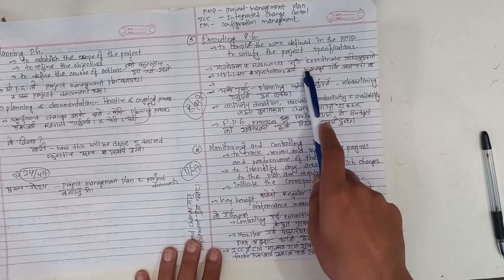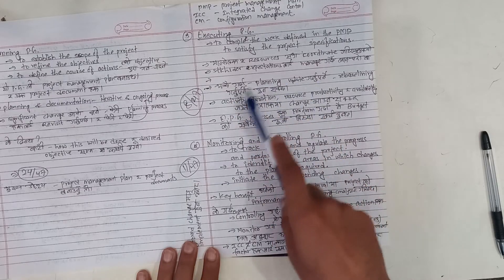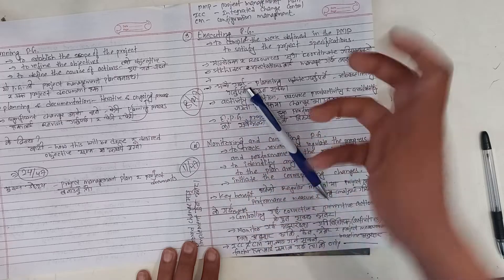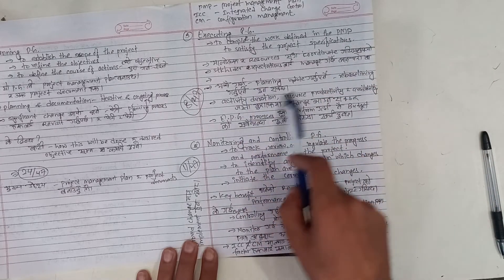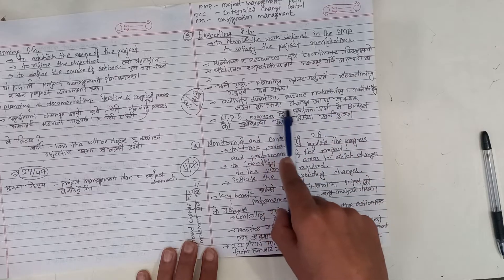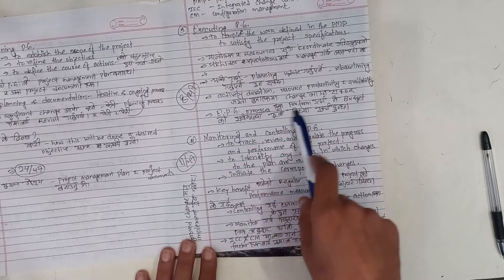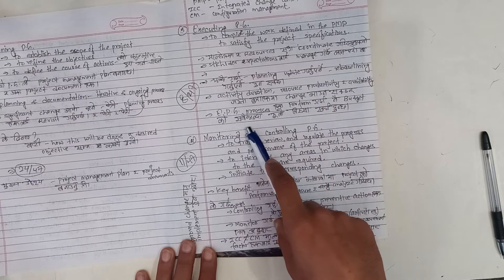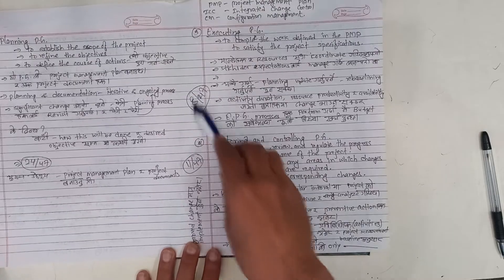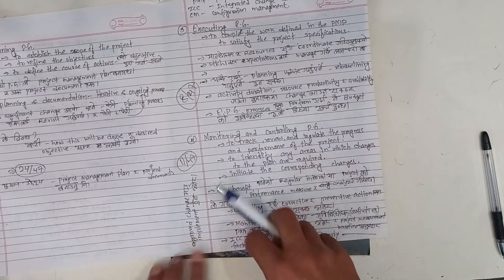During execution, planning updates and reassessments may be required, as activity duration, resource productivity, availability, and data can change. Executing process group processes typically incur the highest budget expenditure. The transition to monitoring and controlling process group begins here.